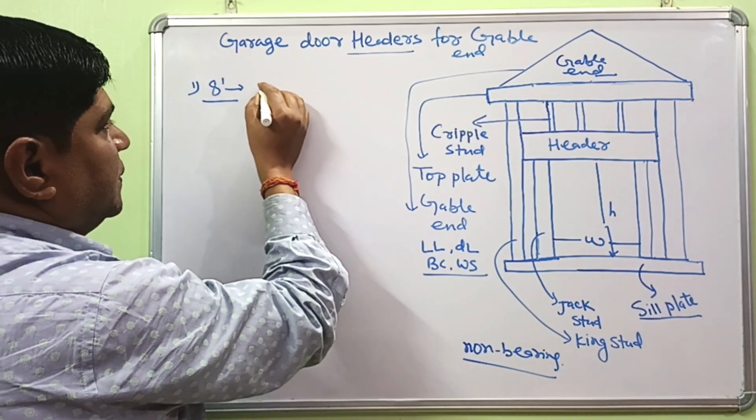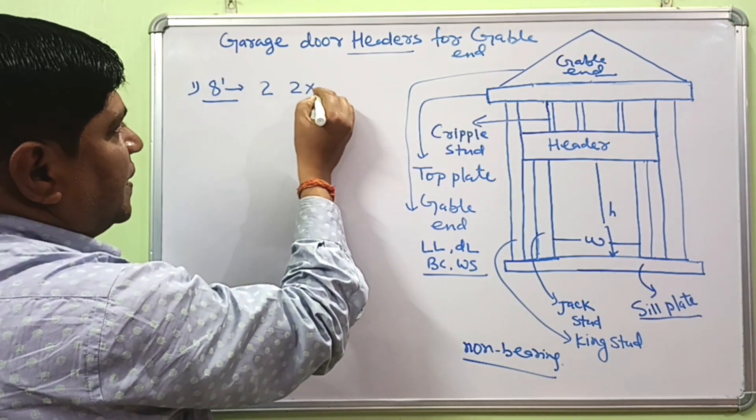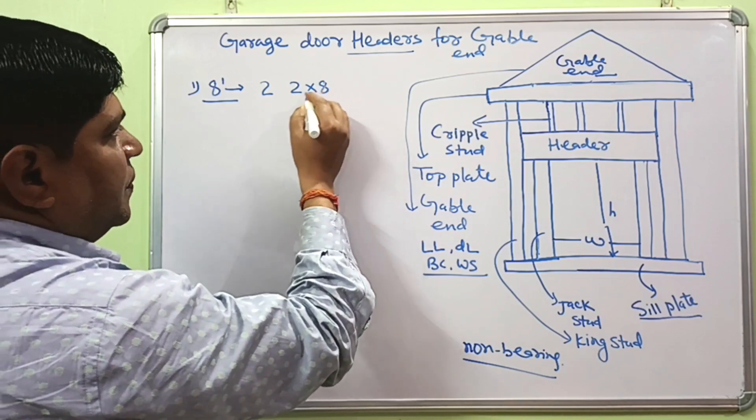If your garage door opening is about 8 foot, then you can use double 2 by 8 piece of lumber, or it can also be written as 4 by 8 lumber.